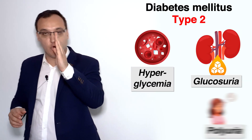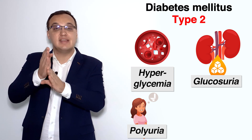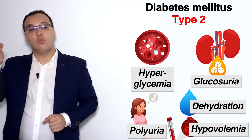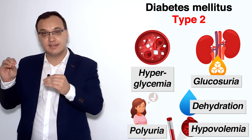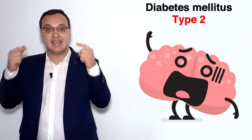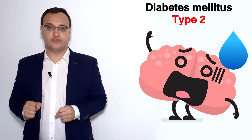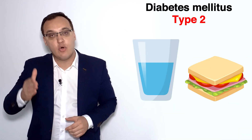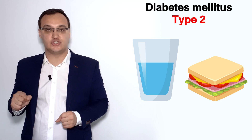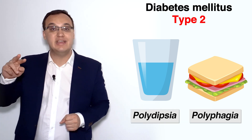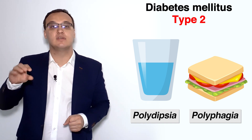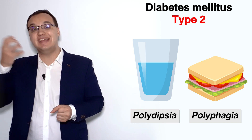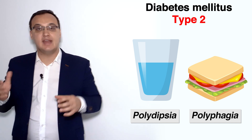Due to polyuria we get dehydration and hypovolemia. With low blood volume, the brain signals that something needs to be done — it says please drink something or eat something. This gives us two more terms: polydipsia and polyphagia. Poly means a lot; dipsia means thirst — so polydipsia means a lot of thirst, i.e., drinking a lot. Polyphagia means a lot of eating. And this is essentially the main picture.